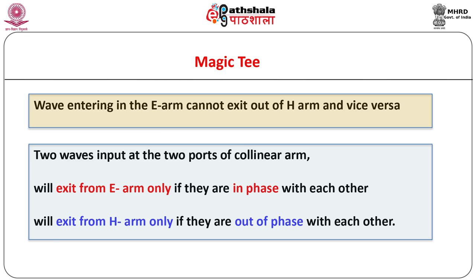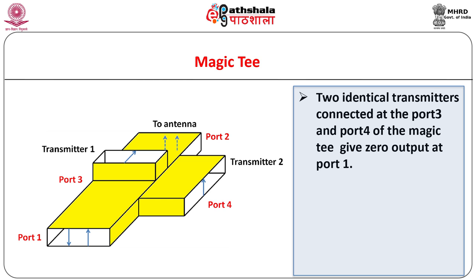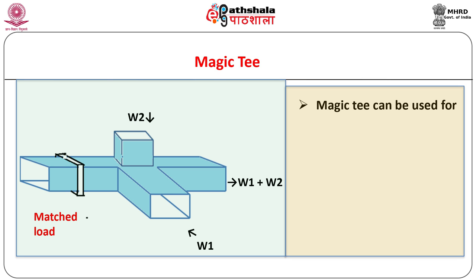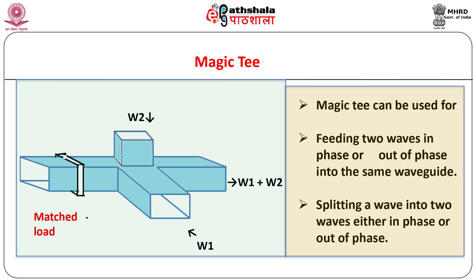How interesting are these results! Magic T is used for applications like impedance matching measurements, mixing, duplexing, etc. As an example, two transmitters identical in all respects if connected at port 3 and port 4 of the magic T will give zero output at port 1. The output at port 2 however will be twice the input. This fact can be used in radar applications wherein it is needed to apply power to the antenna which is double the input power obtained from each of the transmitters, avoiding loading effect — obviously the antenna is to be connected to port 2. Magic T can be used to fulfill the requirement of feeding two waves in phase or out of phase into the same waveguide, and conversely it can be used for splitting a wave into two waves either in phase or out of phase.